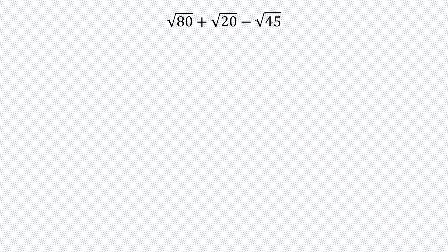So this is what we're going to do. We're going to write each of those numbers as a product of a perfect square and an integer. So 80, I'm going to write as a product of a perfect square and an integer. The same for 20 and 45.